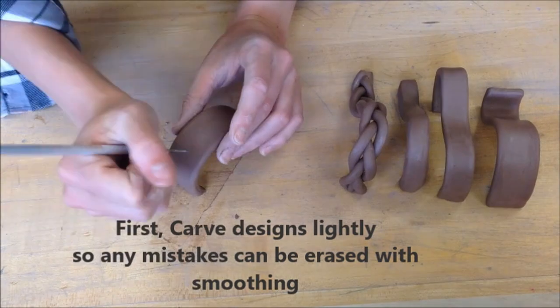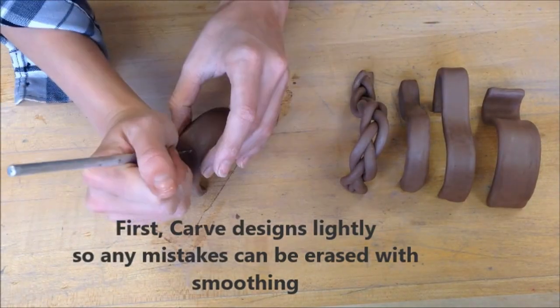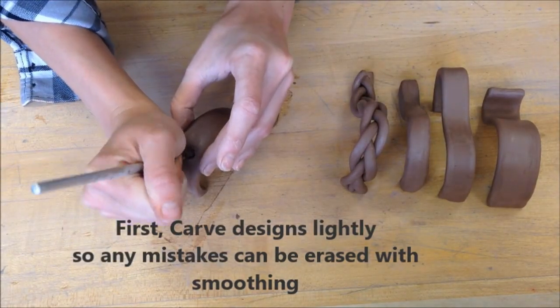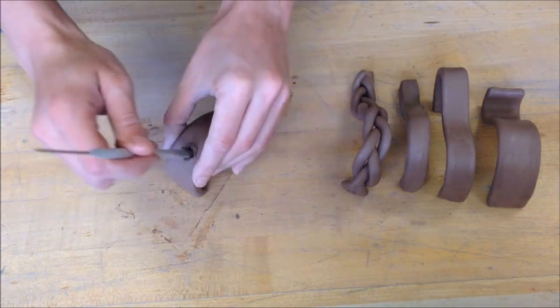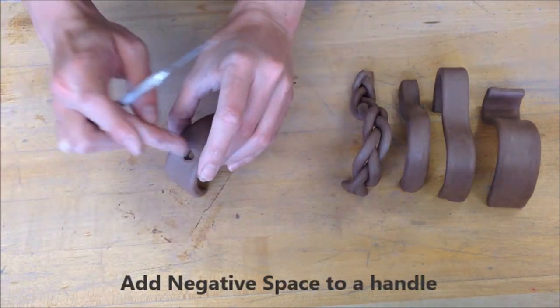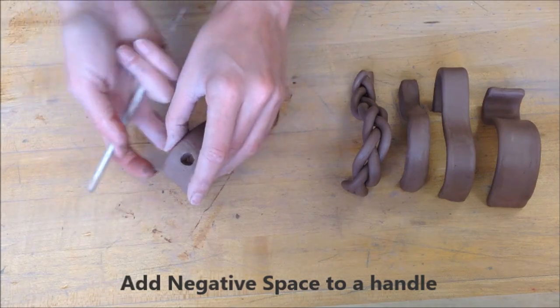You could carve designs lightly. So that way, if you're not happy with something, you can just erase mistakes with smoothing. In this example, I'm adding negative space to the handle by punching through.